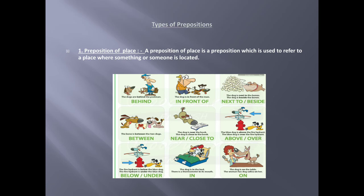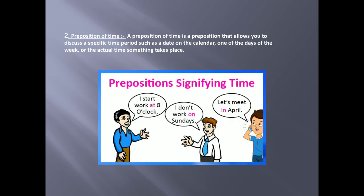Now, we will move to the next one. Preposition of time. A preposition of time is a preposition that allows you to discuss a specific time period such as date on a calendar, one of the days of the week or the actual time something takes place.